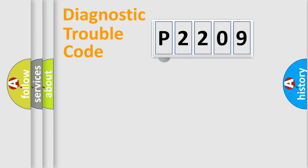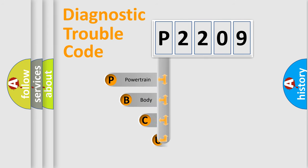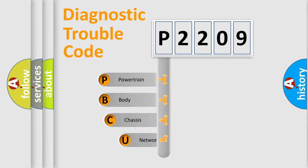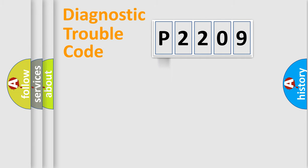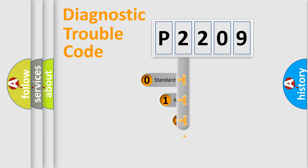First, let's look at the history of diagnostic fault code composition according to the OBD2 protocol. We divide the electric system of an automobile into four basic units: powertrain, body, chassis, and network. This distribution is defined in the first character of the code.